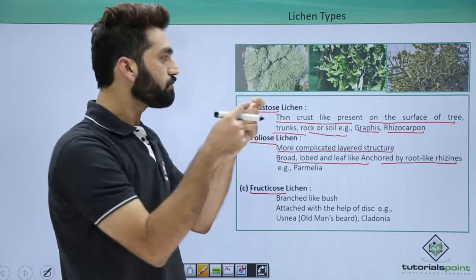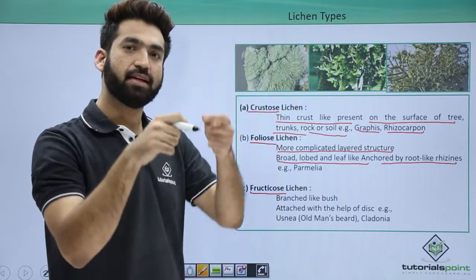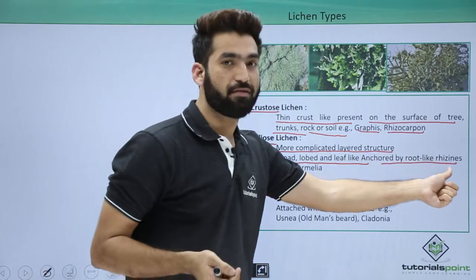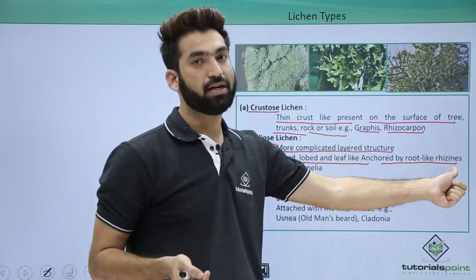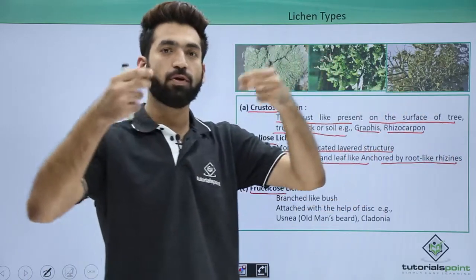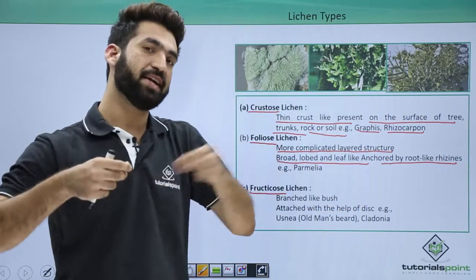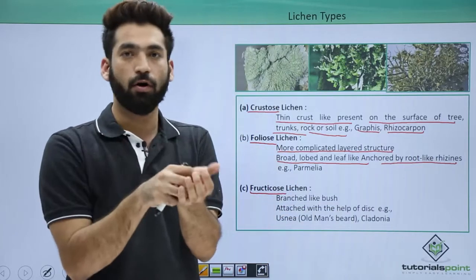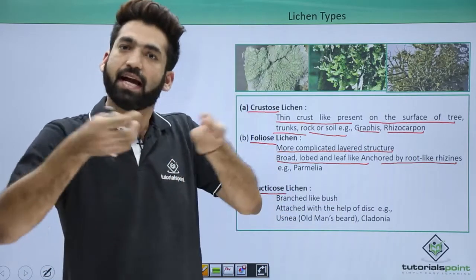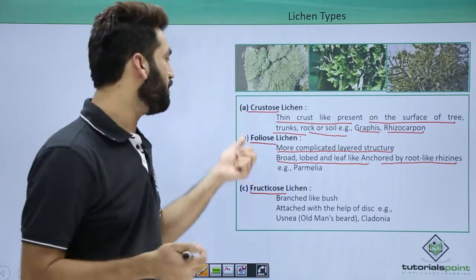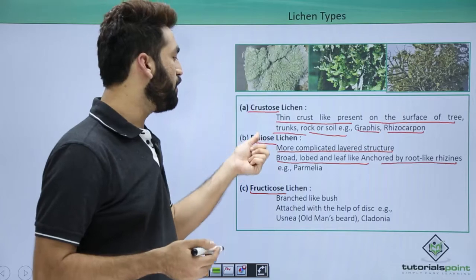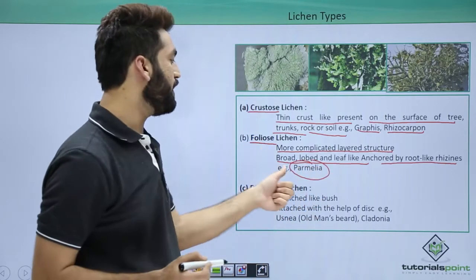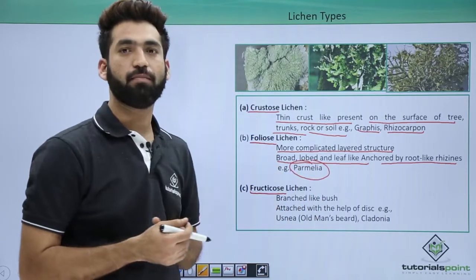In lichen, the root-like structures are called rhizines, through which they hold on and develop this leaf-like structure, which is called the foliose habit. One important lichen which is foliose is what you call Parmelia.